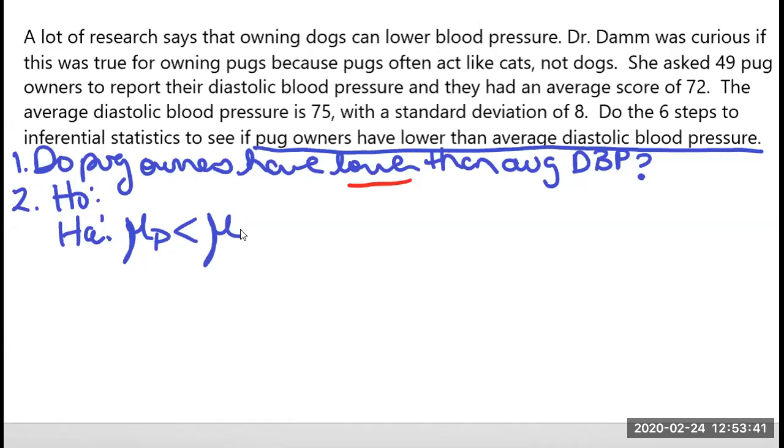So I'm going to put P for pug owners and my alternative is, are the mu blood pressure lower than the regular mu? So then I have to do the opposite. So that's going to be the mu of the pug owners is greater than or equal to the mu. Don't forget that equal to piece here. That is critical to always have in the null.